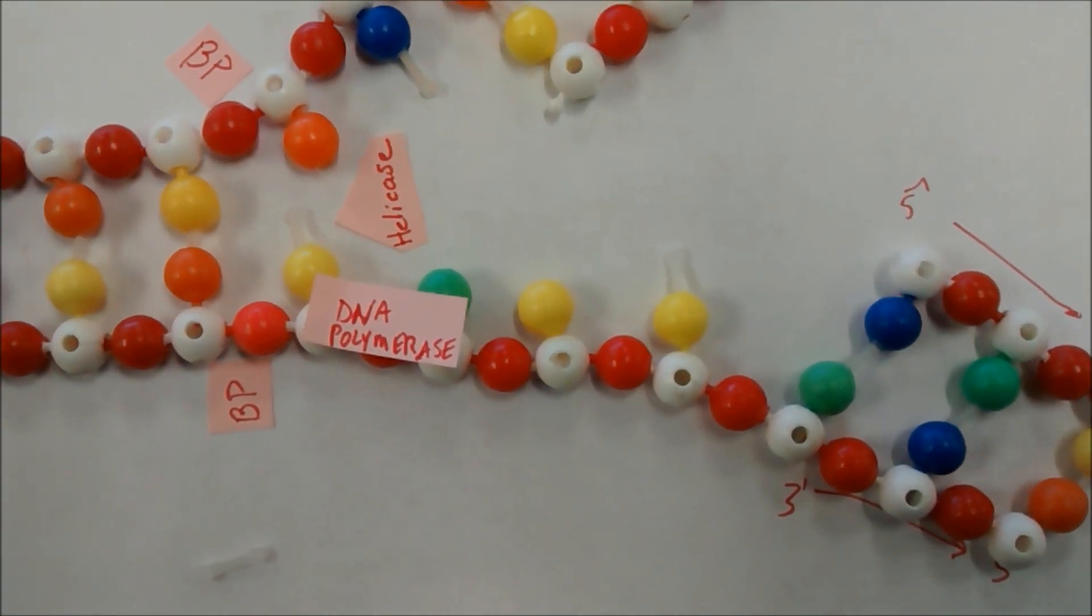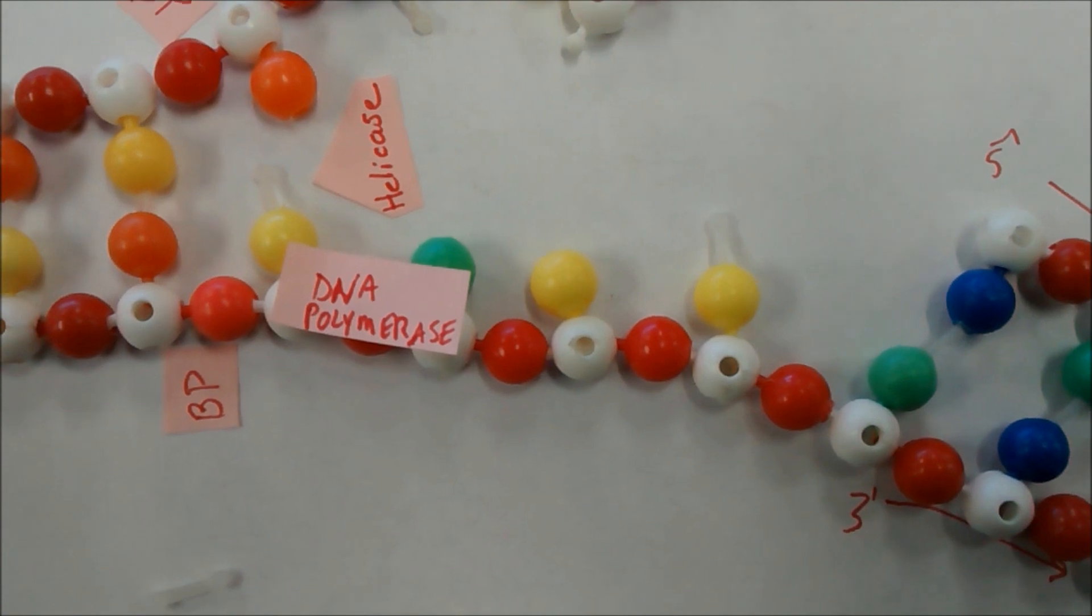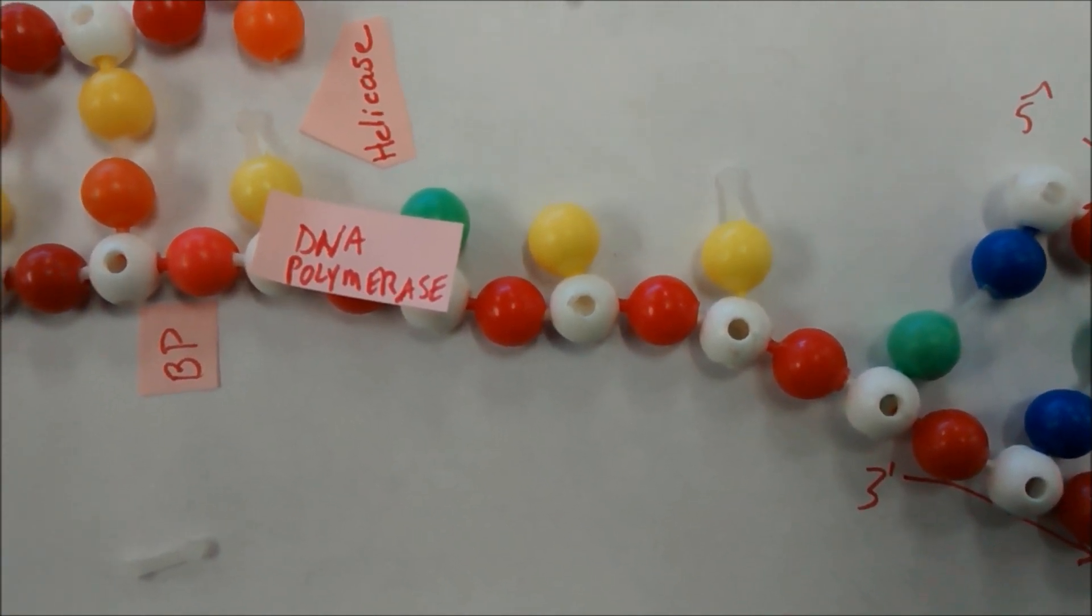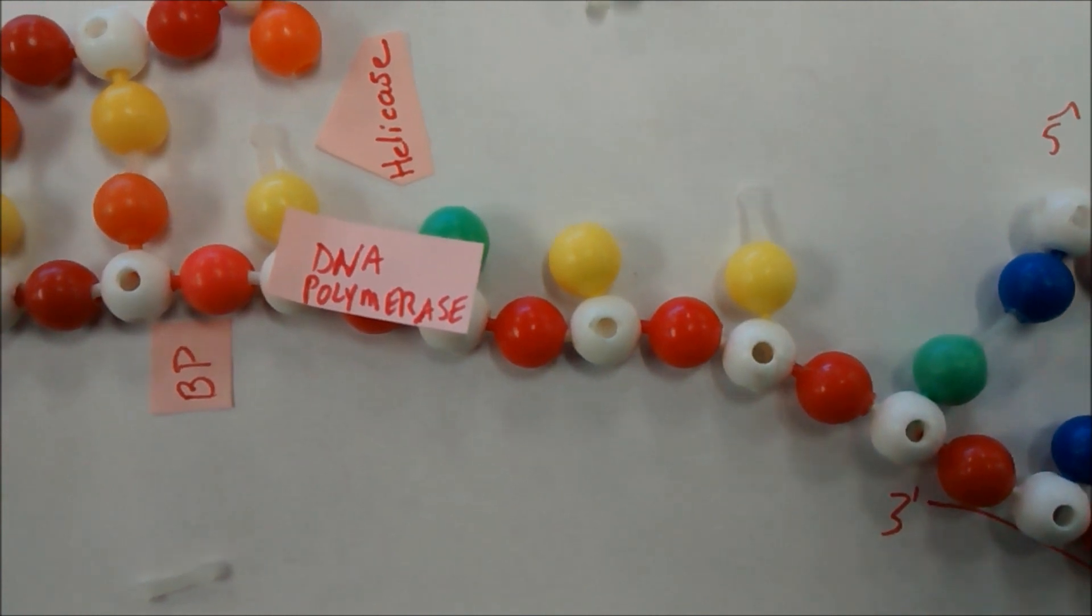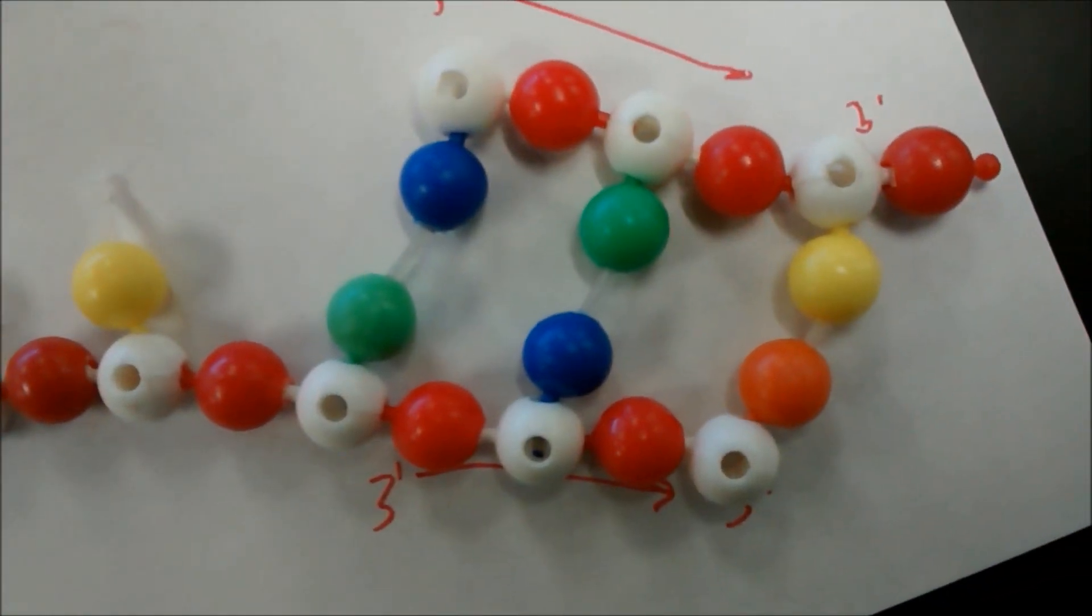What he does is DNA polymerase jumps back, leaps back, goes down the line and finds another three prime carbon, and moves towards five prime again.